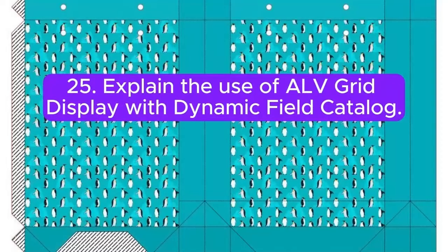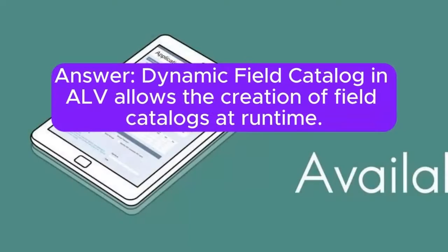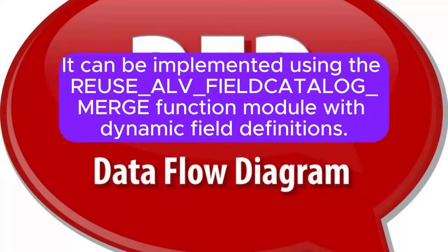Question 25: Explain the use of ALV grid display with dynamic field catalog. Answer: Dynamic field catalog in ALV allows the creation of field catalogs at runtime. It can be implemented using the REUSE_ALV_FIELDCATALOG_MERGE function module with dynamic field definitions.